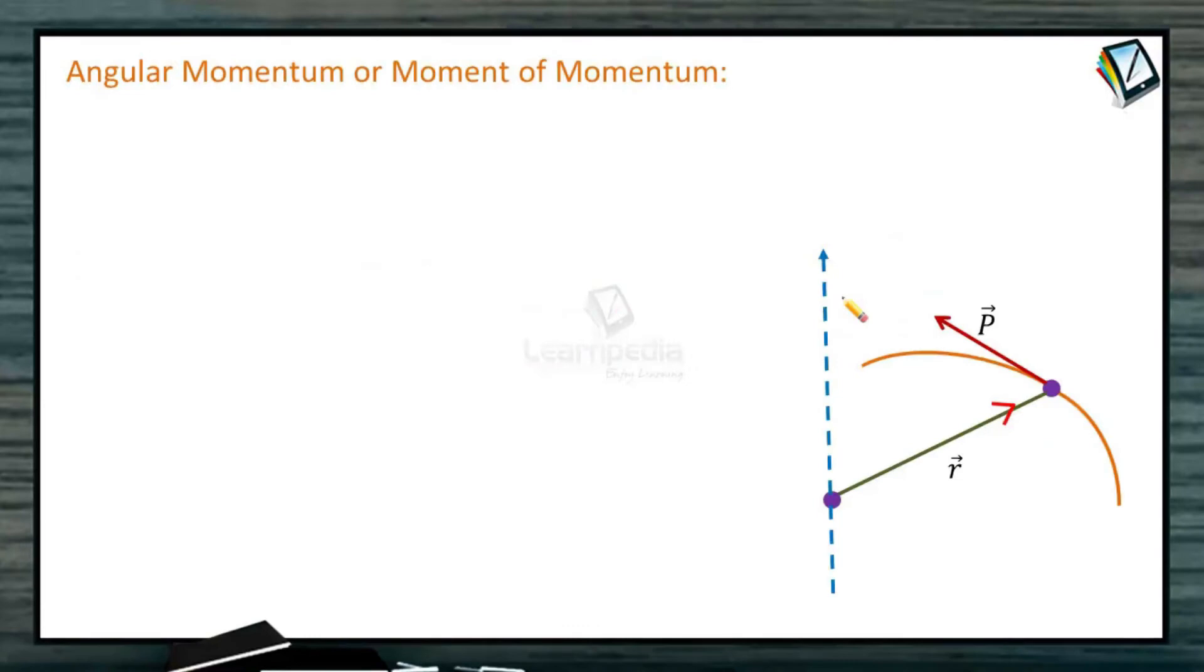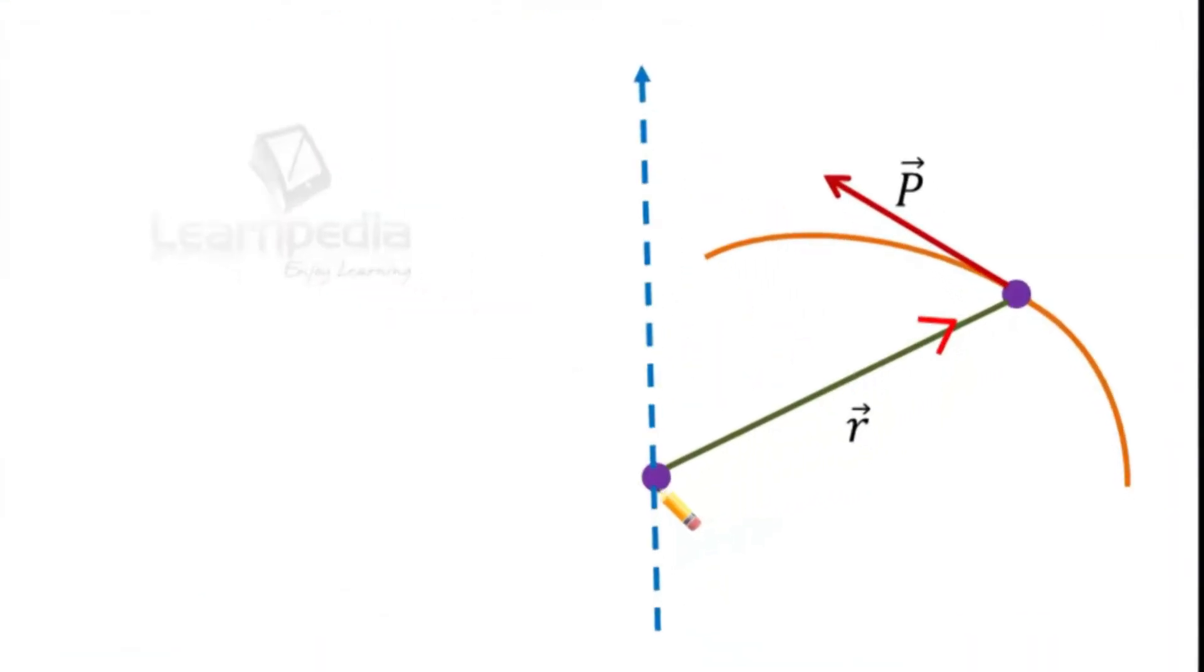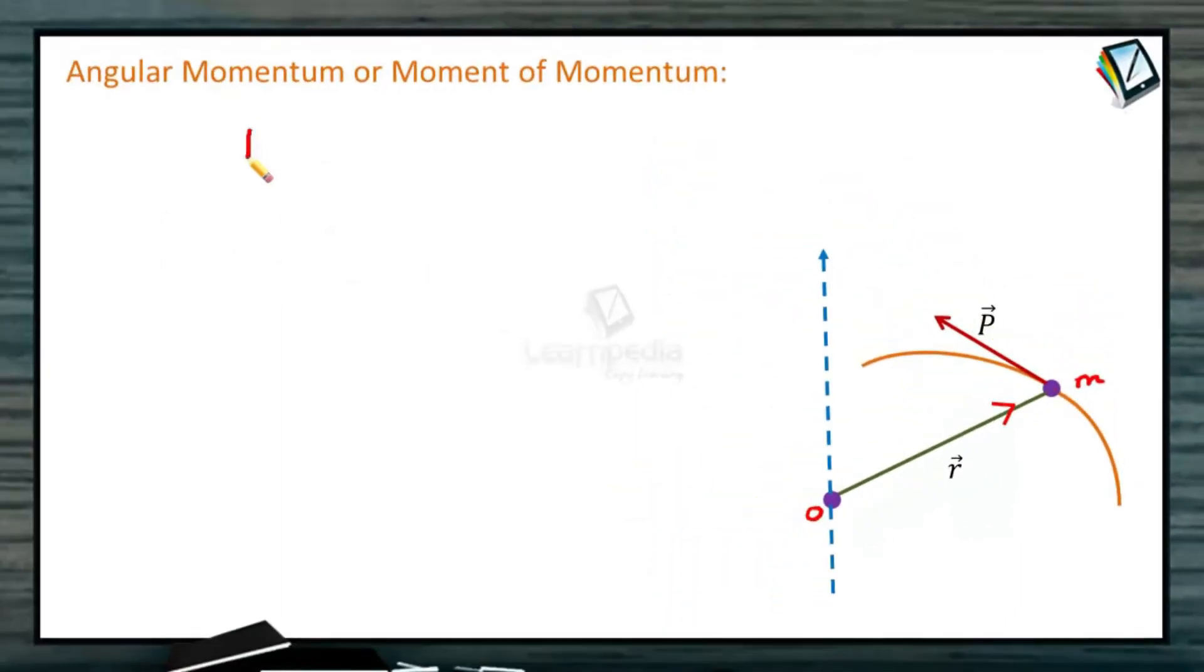So what is angular momentum or moment of momentum? Angular momentum of a particle about a point is defined as follows. This is the axis of rotation or this is the point we have considered. This is the particle of mass m which is at a distance of r. The linear momentum of the body is p. Linear momentum is given as mass into velocity.